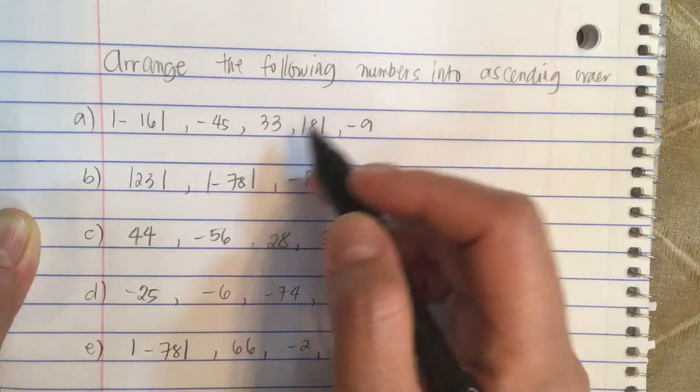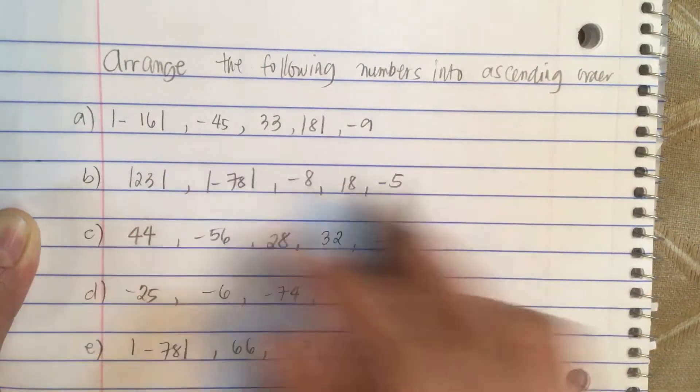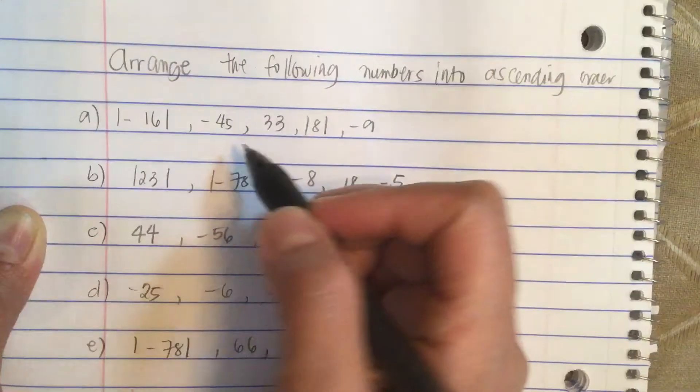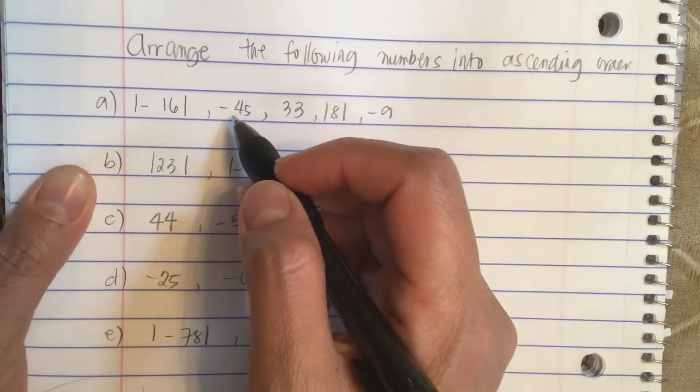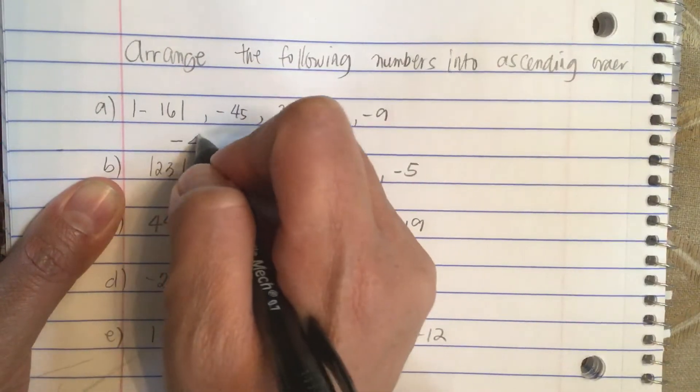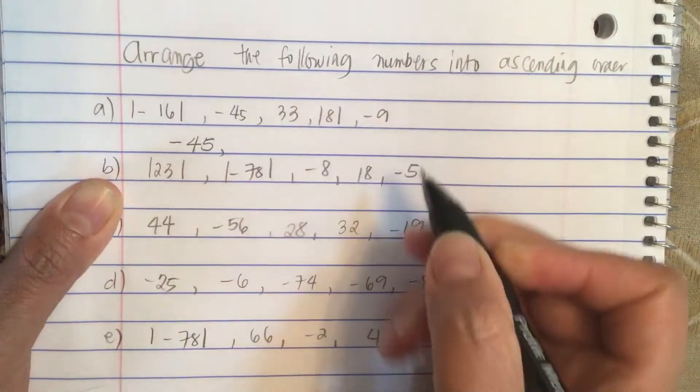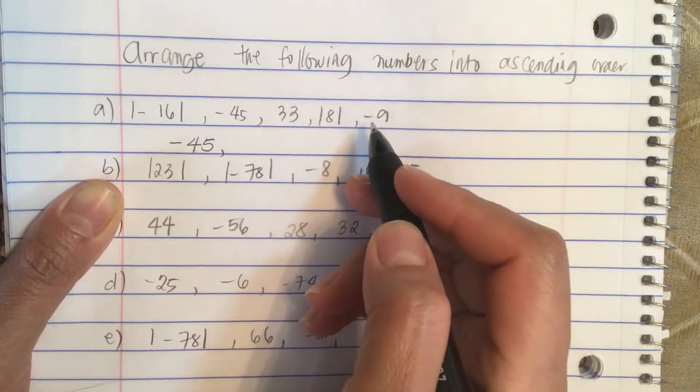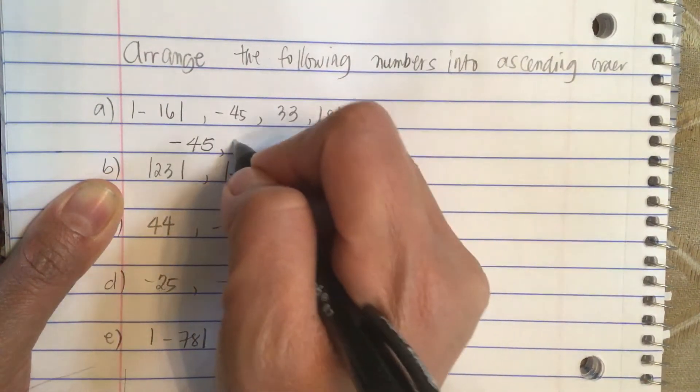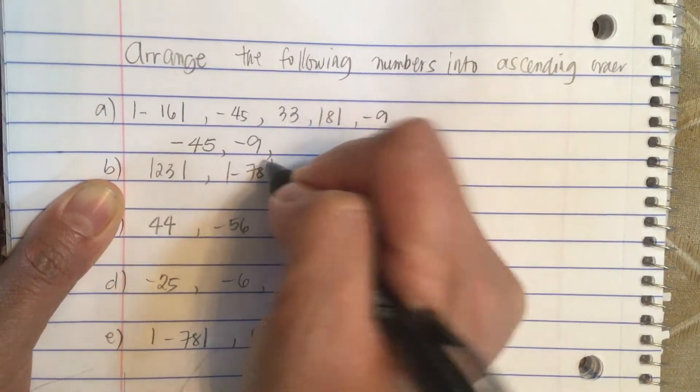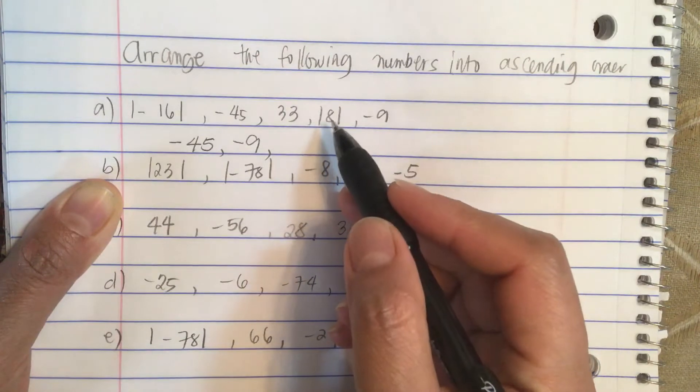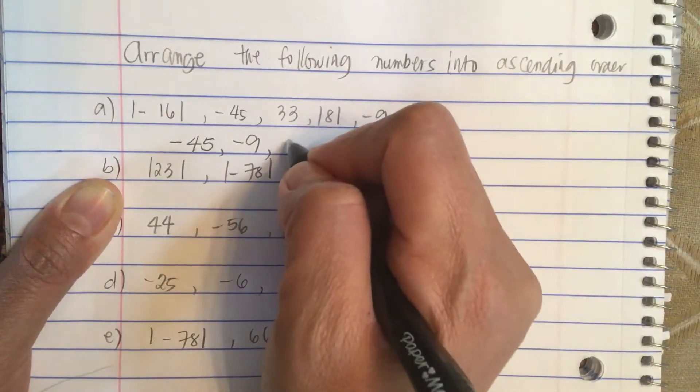So ascending, we start with the smallest number and then it goes up. So the smallest number is minus 45. And then the next one is minus 9. And then we have 8, absolute value of 8.